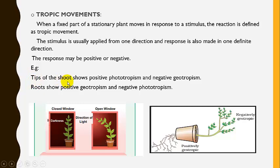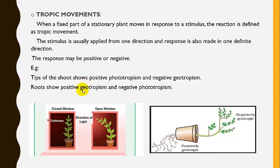Examples of tropic movements: the tips of the shoot show positive phototropism, meaning they grow towards the light, and negative geotropism, meaning they grow away from gravity. Roots show positive geotropism, meaning they grow into the soil towards gravity, while they show negative phototropism, meaning they grow away from the light.